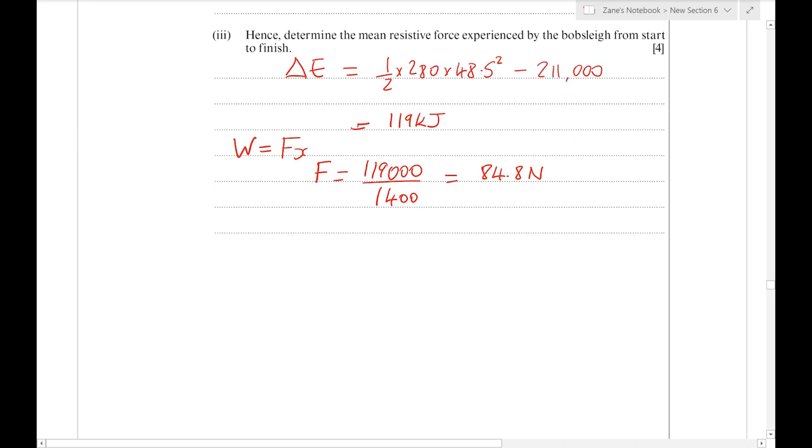That gives 84.8 N or 85 N. That's an average resistive force because the frictional and air resistance forces increase as the speed increases. But we're not asked to find the total or final resistive force, just the average.